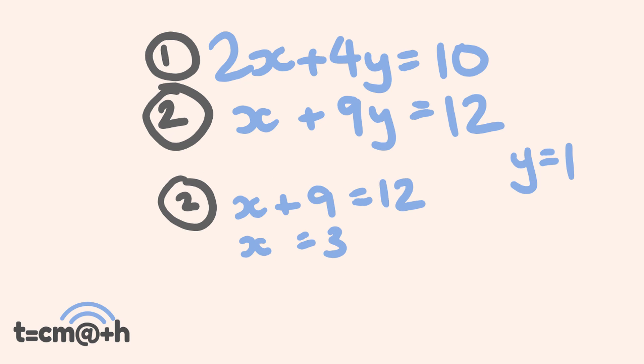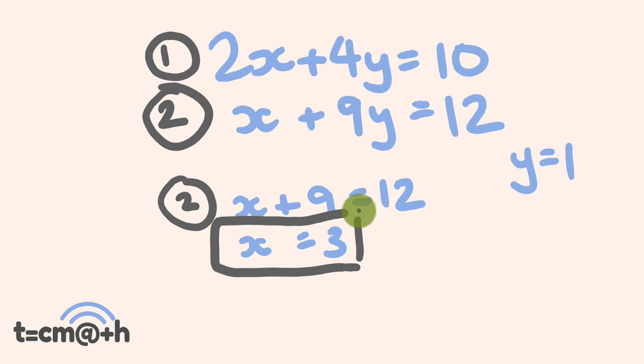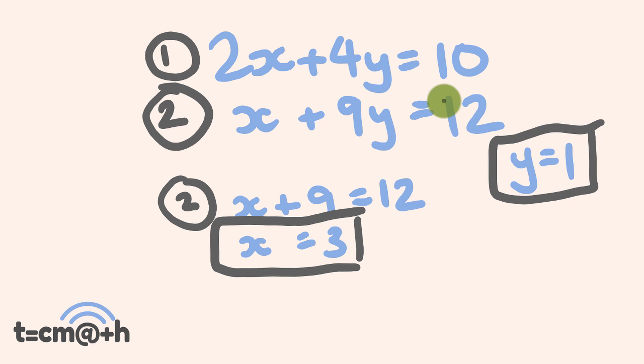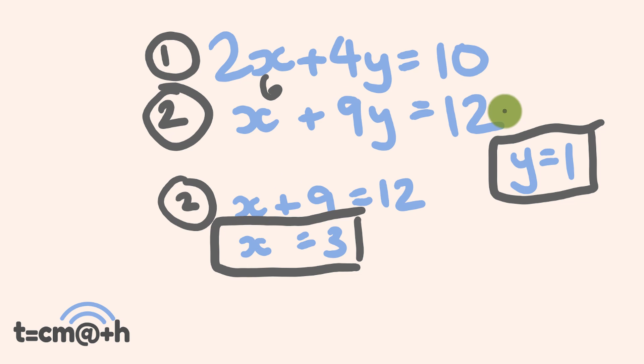So we have our two values: x is equal to 3 and y is equal to 1. The next thing I do — it's good policy to substitute your x and y values into the first equation just to see if you got it correct. So 2 times x is equal to 6, and 4 times y — y is equal to 1 — so that is equal to 4. 6 plus 4 is equal to 10. We've got the correct answer. And that's how you solve these particular equations using the elimination method.